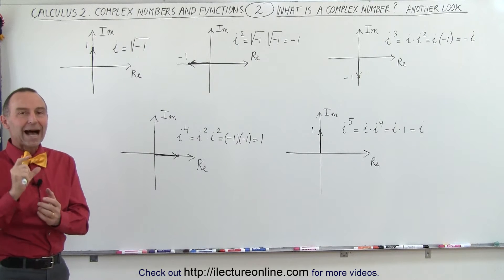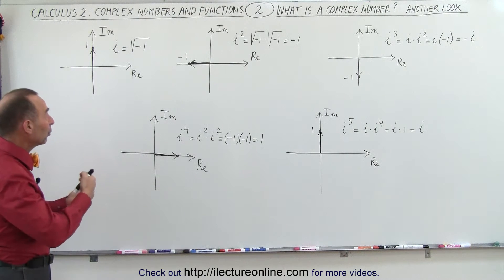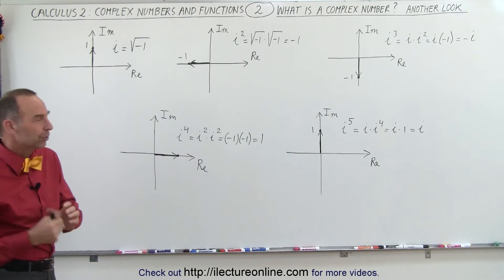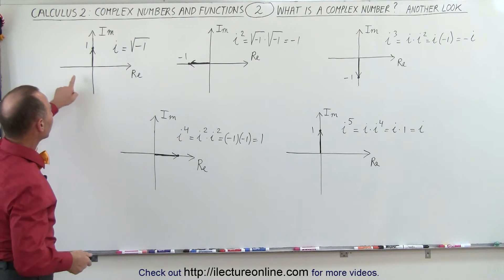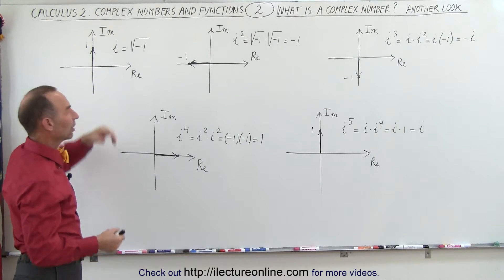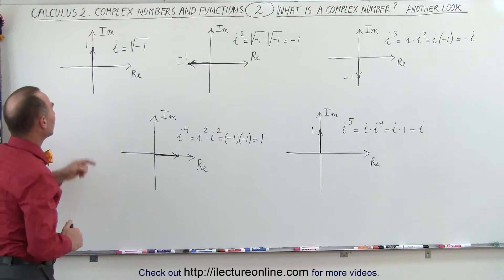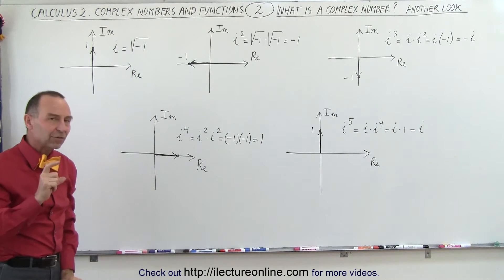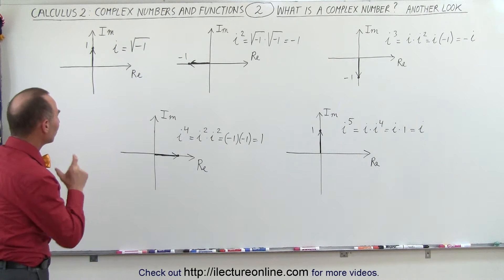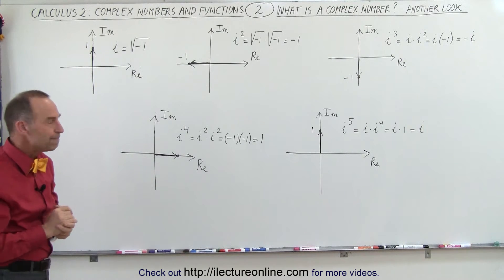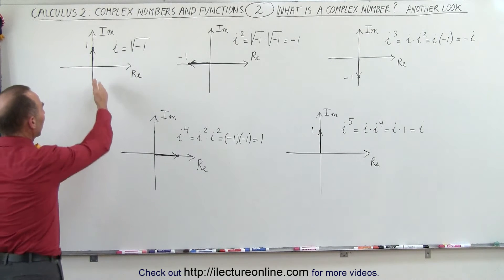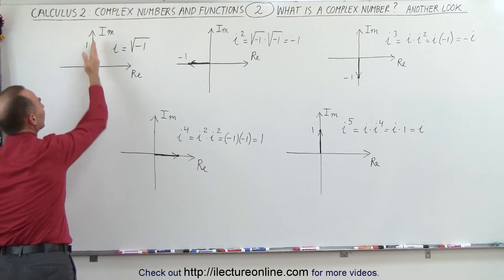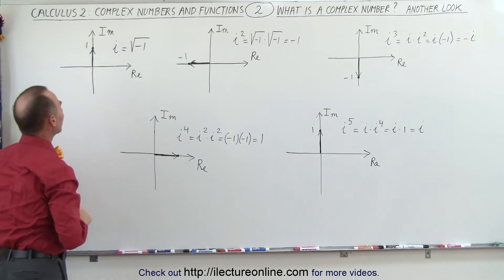We're going to look at what i is equal to, and then what we get when we take i squared, i cubed, i to the fourth power, i to the fifth power, and so forth. Let's take a look at the number i, which can be the imaginary part of a complex number. Notice i is defined as the square root of negative one. If we represent a complex number by a vector quantity and draw it out like this, we can see it's pointing from the origin in the positive imaginary direction, a unit one away from there.